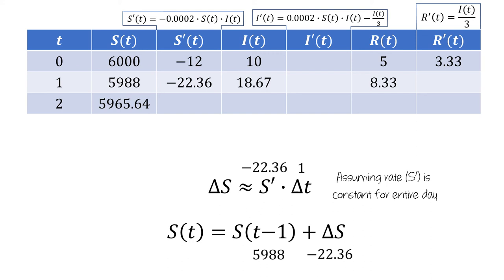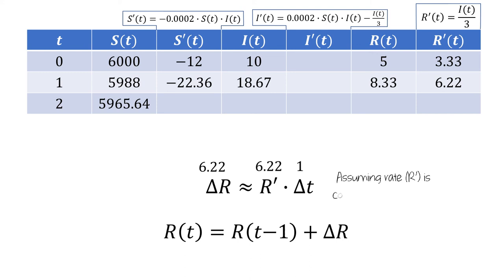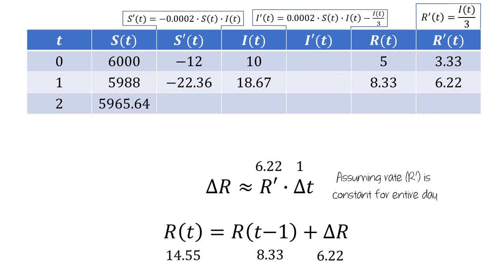Now let's compute R(2). We'll compute R'(t) using the differential equation — we'll divide the value of I by 3 to get 6.22 people per day for R'. We're going from one to two days, so delta t is one day. The rate at t=1 is 6.22 people per day, so delta R is approximately 6.22. This is approximate because we're assuming that the rate R' is constant for the entire day. Using delta R along with R(1), there are 14.55 removed individuals at t equals 2.